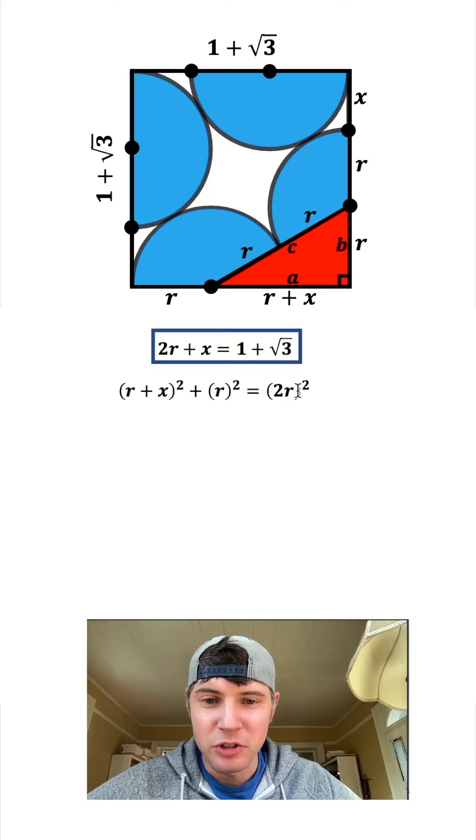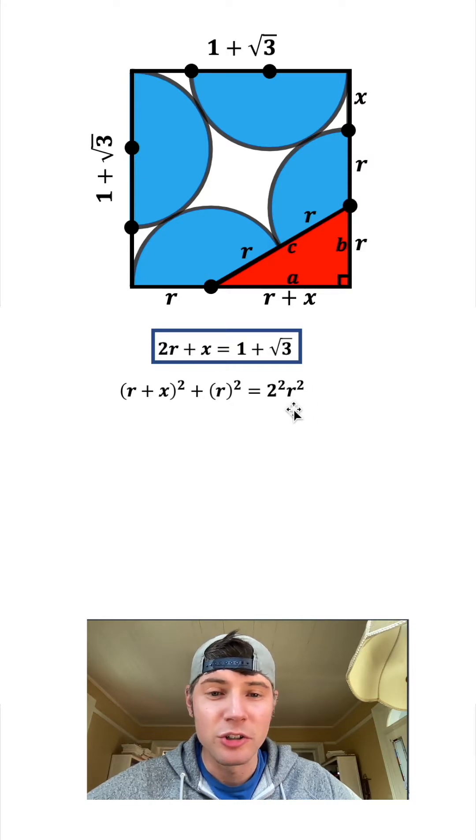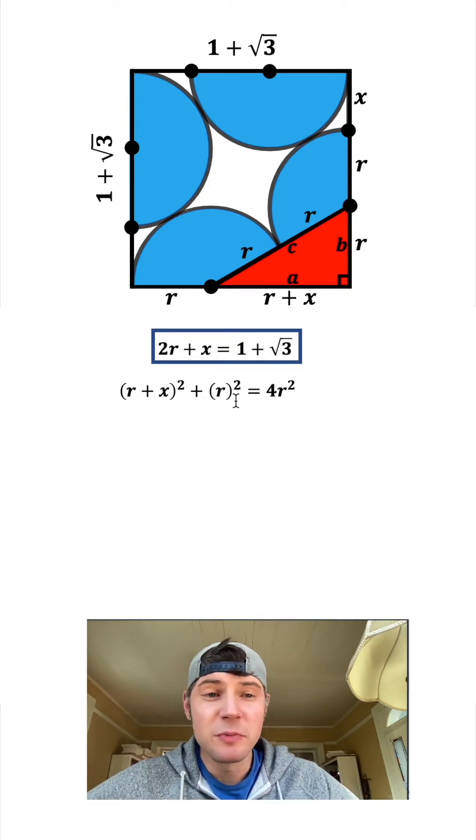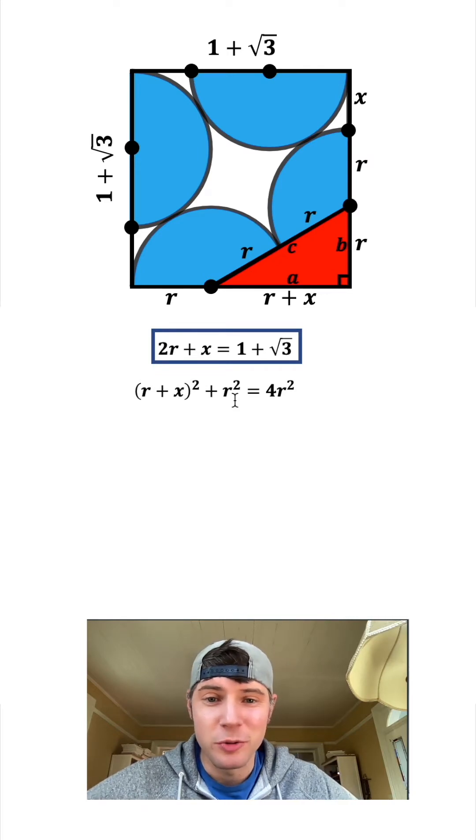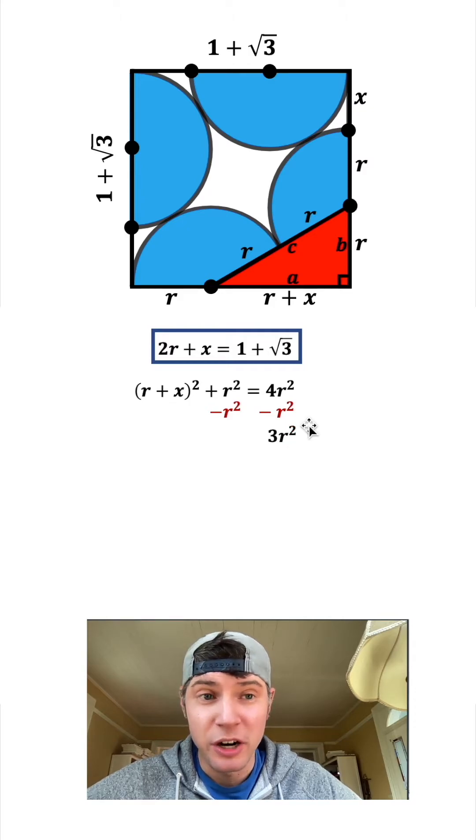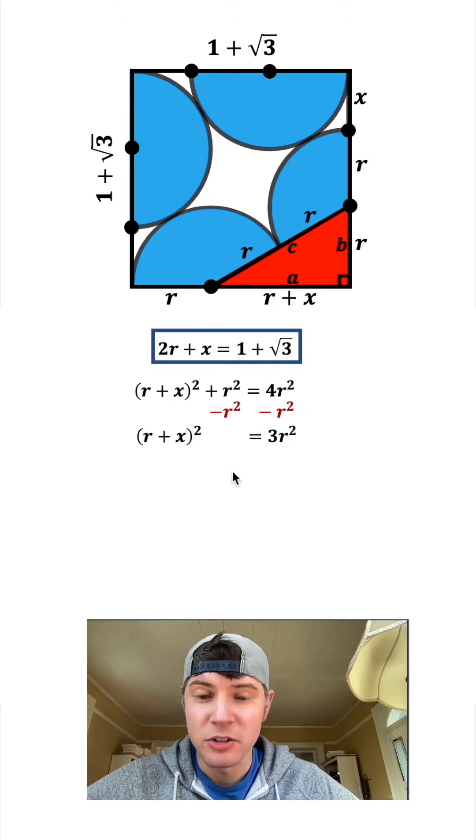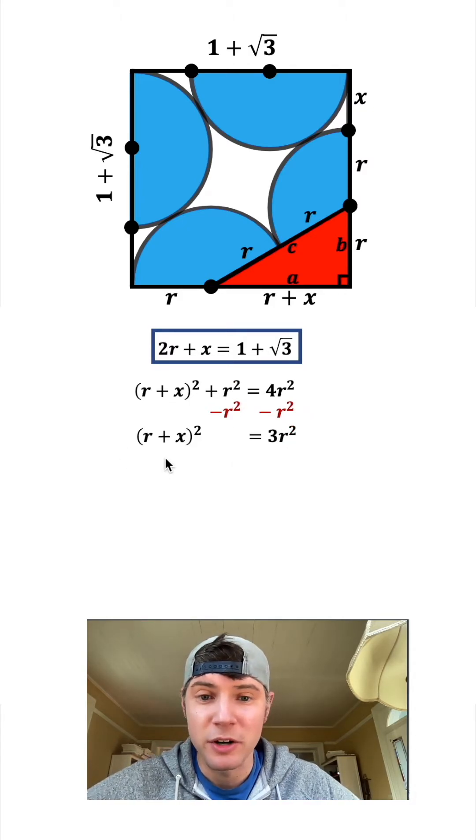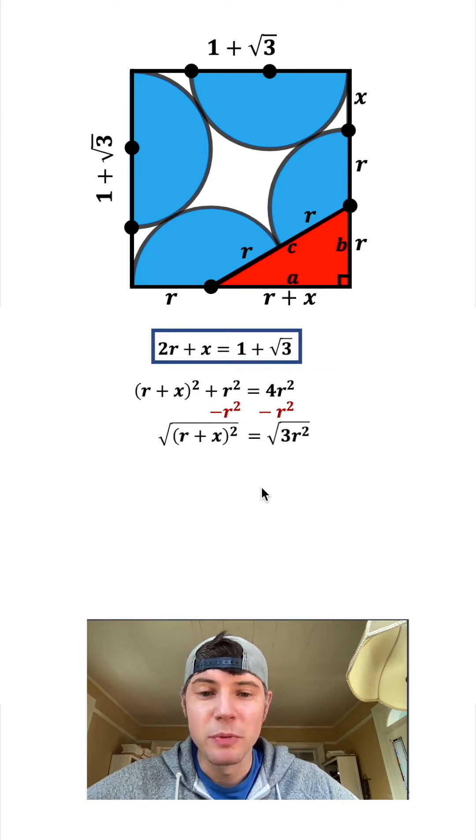Subtracting R squared from both sides, we get (R plus X) squared equals 3R squared. Taking the square root of both sides, R plus X equals square root of 3R squared.